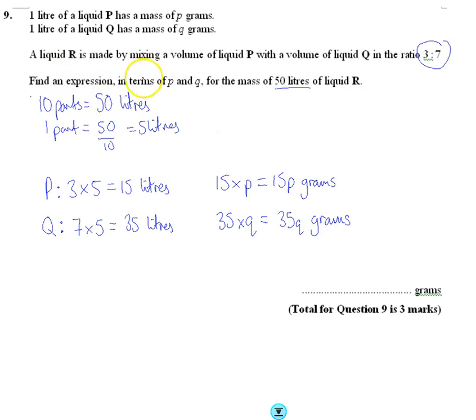It's asking for an expression in terms of P and Q for the mass of all 50 litres, so it's these two together, so it's just 15P plus 35Q, and that's it.